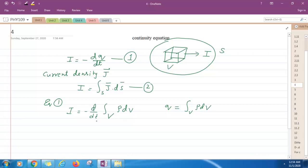Now substitute this value of I also in this equation. You will have surface integration J dot ds is equal to minus d by dt volume integration rho dv.